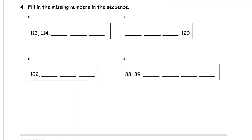Fill in the missing numbers in the sequence. So here we see 113, 114. We're counting by ones, and they're getting larger. So it should be 115 goes next. 116, 117. It can really help to say these numbers out loud.